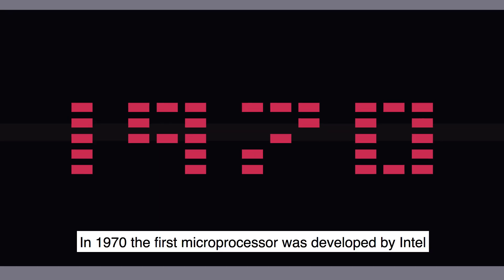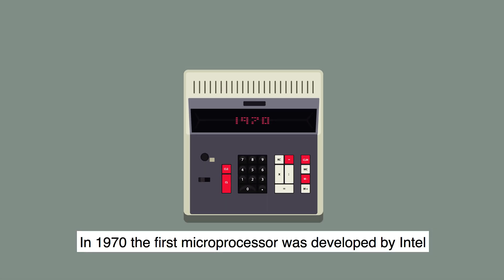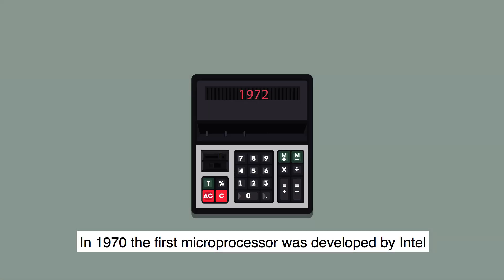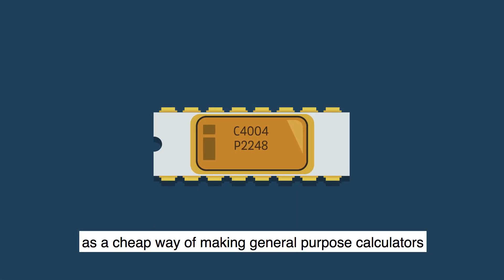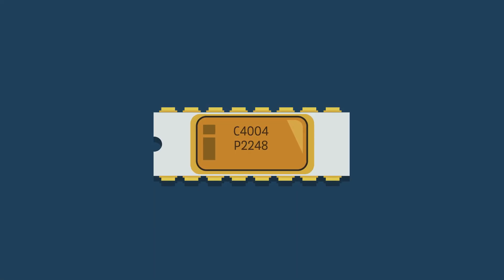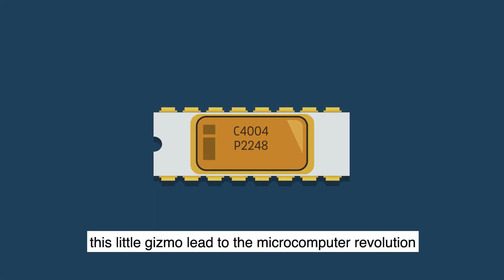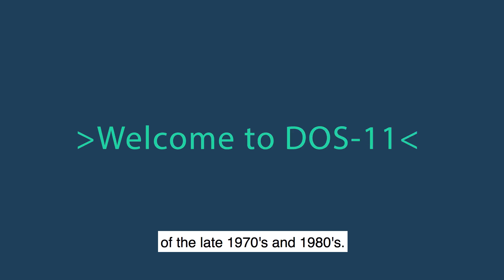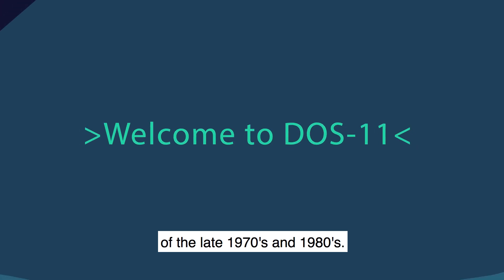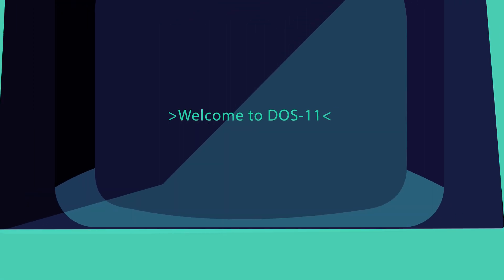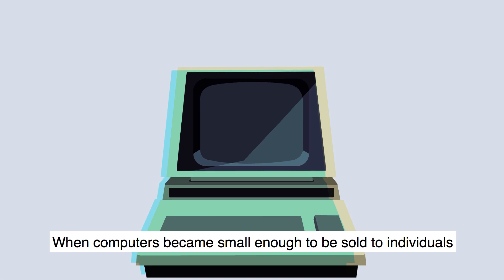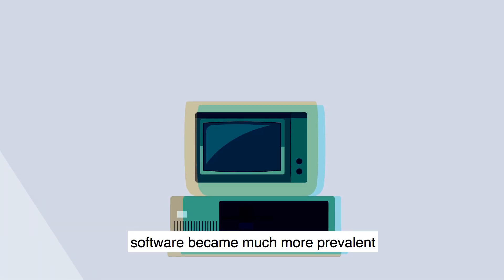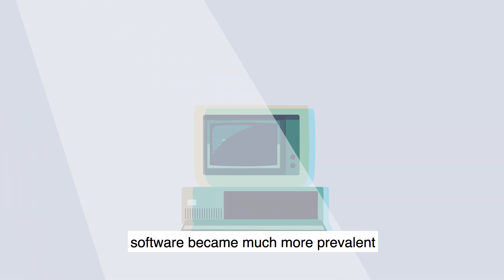In 1970, the first microprocessor was developed by Intel as a cheap way of making general purpose calculators. This little gizmo led to the microcomputer revolution of the late 1970s and 1980s. When computers became small enough to be sold to individuals, software became much more prevalent.